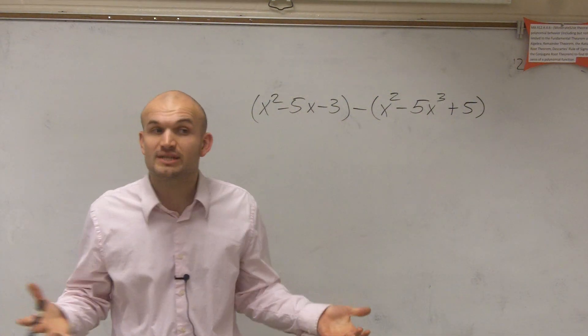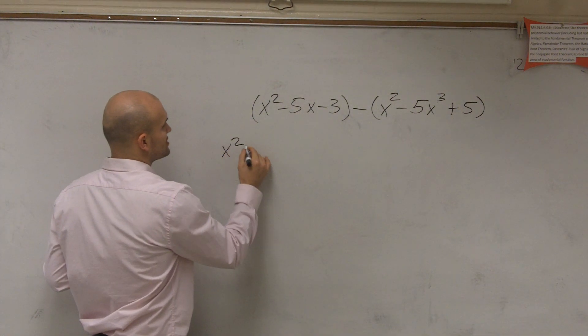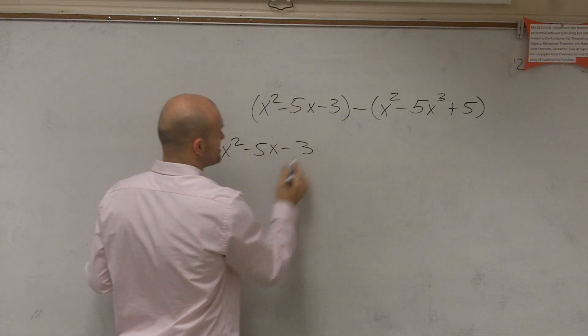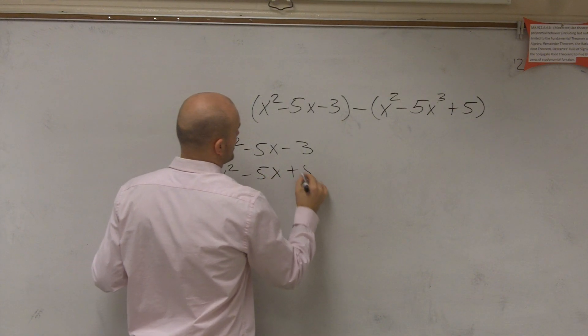First way, I'll show you the vertical method. Just like we did with adding, you're just going to subtract. So you write x squared minus 5x minus 3 minus, and then you have x squared minus 5x plus 5.